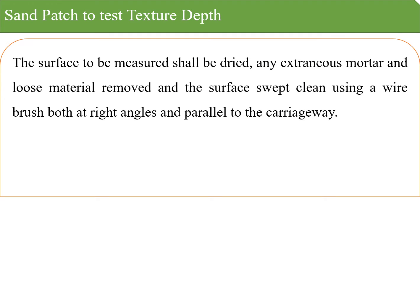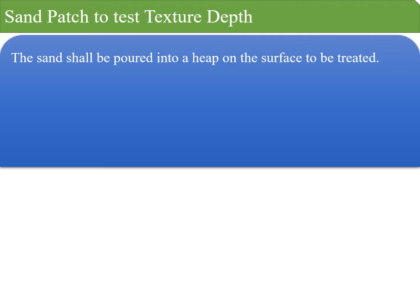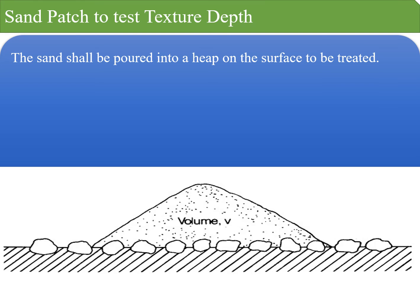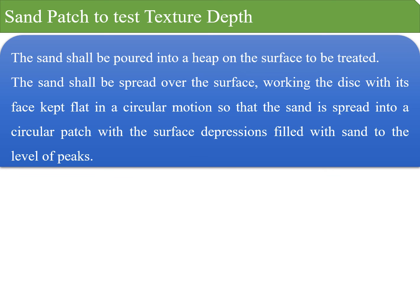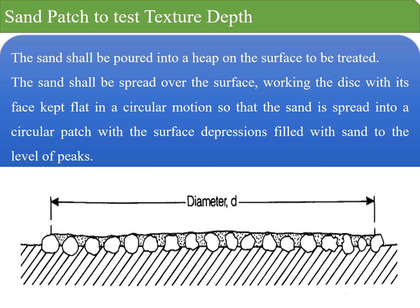The surface to be measured shall be dried, any extraneous mortar and loose materials removed, and the surface swept clean using a wire brush both at right angles and parallel to the carriage way. The cylindrical container shall be filled with sand, tapping the base three times on the surface to ensure compaction, then striking off the sand level with the top of the cylinder. The sand shall be poured into a heap on the surface, then spread over the surface by working the disc with its face kept flat in a circular motion so that the sand fills a circular patch with the surface depressions filled to the level of the peaks.